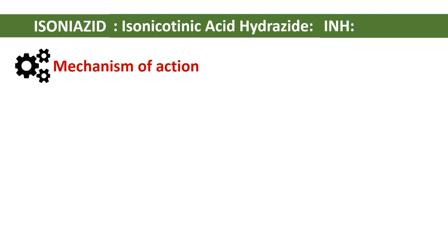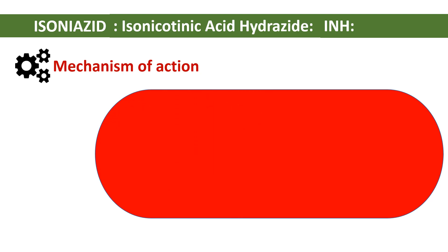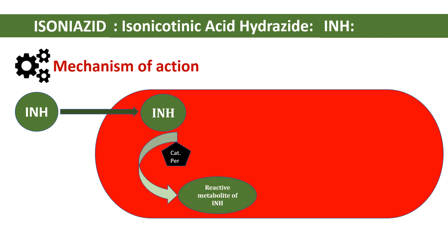Consider a mycobacterium — a patient has taken isoniazid. This isoniazid enters into the mycobacterium, and an enzyme called catalase-peroxidase acts on isoniazid, resulting in the formation of a reactive metabolite of isoniazid. From this reactive metabolite, an adduct is formed by the action of an energy carrier present within the mycobacterium.